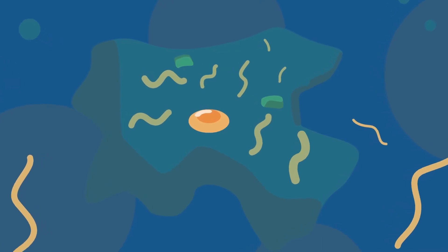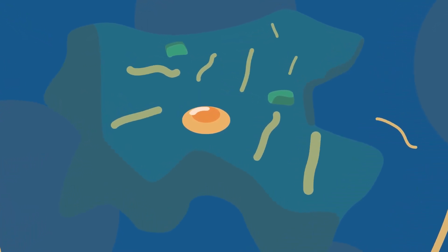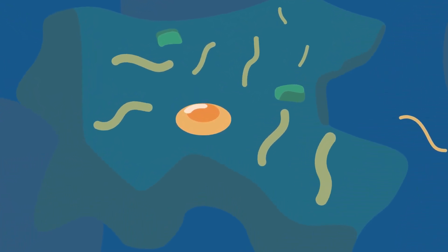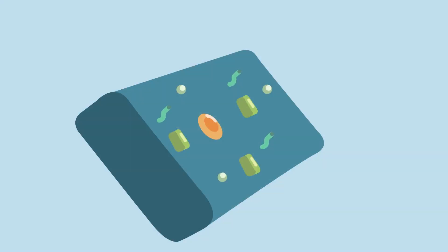Stem cell niches are microenvironments that provide a supportive function for stem cells, creating an environment where they can live. Now let's take a look at how this works in a little bit more detail.